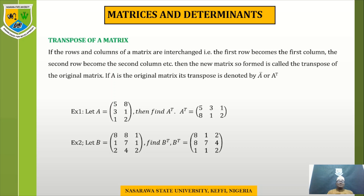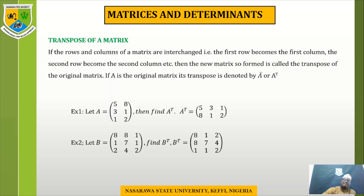For matrix B with first row 8, 1, second row 1, sub-1, and third row 2, 4, 2: to get the transpose, the first row 8, 1 becomes the first column; the second row becomes the second column; and the third row becomes the third column. The order changes accordingly from 3 by 2 to 2 by 3.